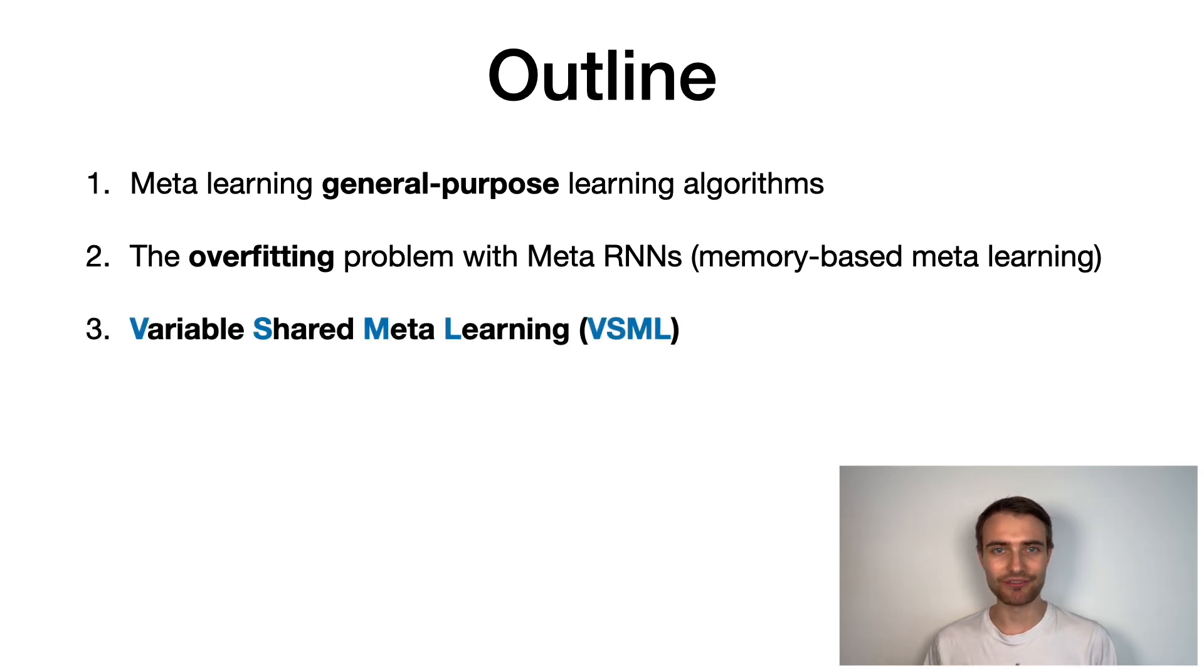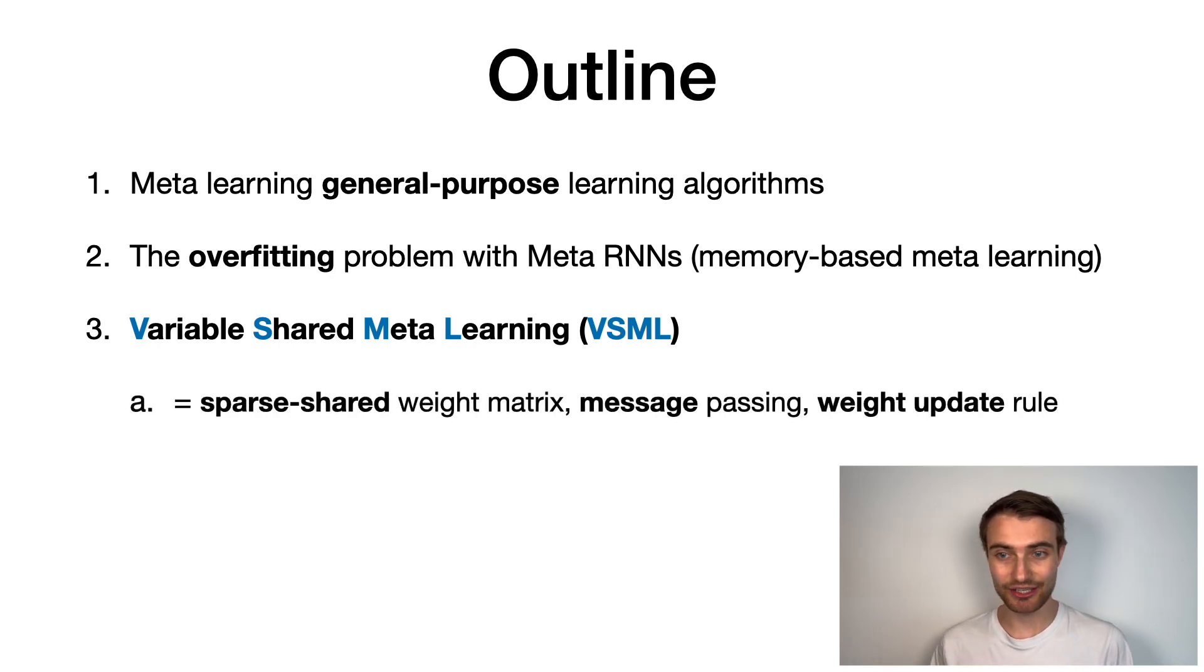We then propose our method, variable-shared meta-learning. VSML can be seen as a sparse shared weight matrix, message passing between RNNs, or equivalently as learning how to update your weights.